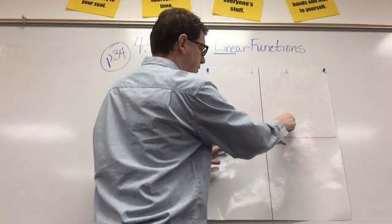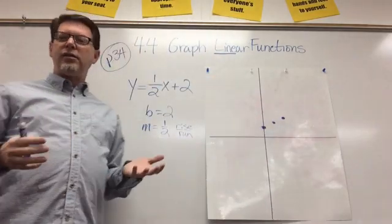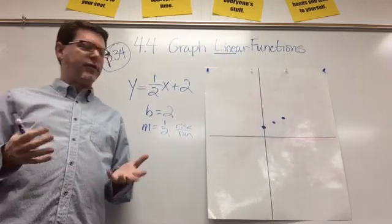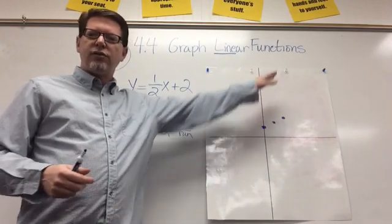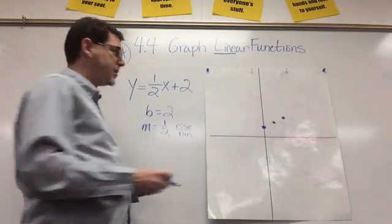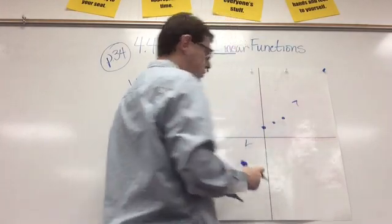And I'm going to go up 1 and to the right 2, and there's my next point. In this class, we have to have 3 points to graph a line. So, I have 3 points. And now, I can use my ruler to draw a line through those points. And the key on this part is putting an arrow at the end once you draw your line.